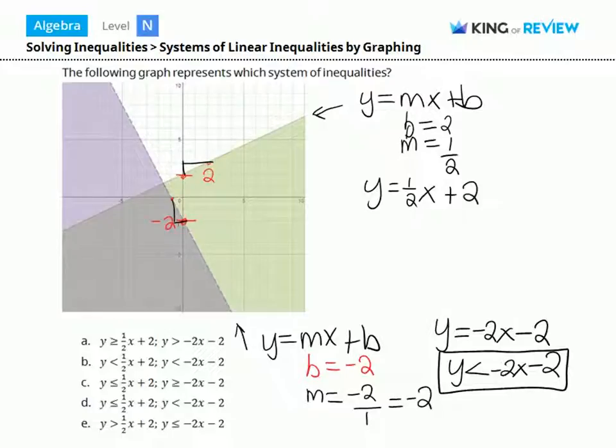Next, determine which sign to use. We see that everything below this solid line is shaded. So we have y is less than or equal to 1 half x plus 2. Because it's a solid line, we know it's less than or equal to. This is the second inequality in our system.